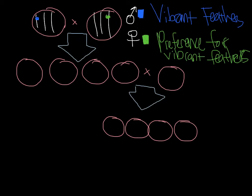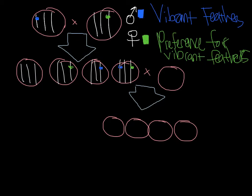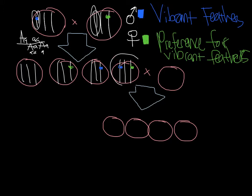Now what we expect to see is the following progeny ratio: 25% are going to have both alleles, 25% one, 25% the other, and 25% have neither. This is because if we have a dominant allele — say big A crossed with little a — this gives us a 1-to-1 ratio, a 50% chance. And 50% times 50% gives us the 25% combined probability.